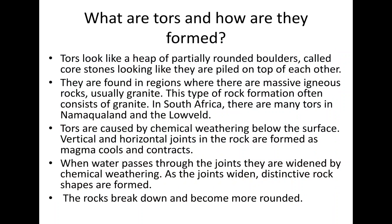Now we are moving to tors. What are tors and how are they formed? Tors look like a heap of partially rounded boulders called core stones, looking like they are piled on top of each other. Tors are found in regions where there are massive igneous rocks, usually where there is granite. In South Africa, there are many tors in Namaqualand and in the lowveld areas of Mpumalanga.